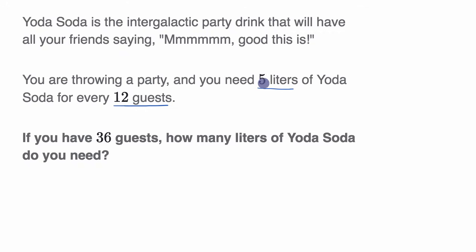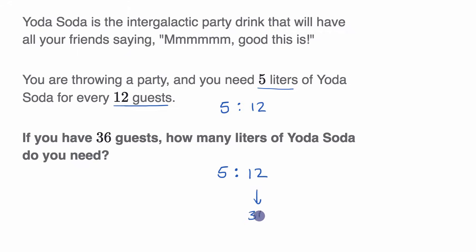They tell us the ratio of liters of soda to number of guests. You need five liters for every 12 guests — that's the ratio. But we want to have 36 guests. So if the ratio is five liters of soda for every 12 guests, and we're now in a situation where we have 36 guests, that is three times as many guests, so we're going to need three times as many liters of soda.